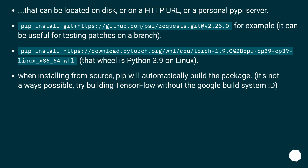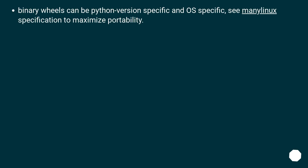When installing from source, pip will automatically build the package. It's not always possible — try building TensorFlow without the Google build system. Binary wheels can be Python version specific and OS specific, using the manylinux specification to maximize portability.